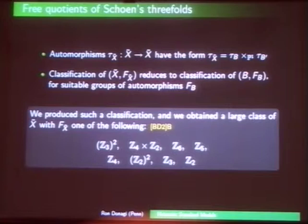We did the classification and the short story is these are the groups you get: the biggest ones are Z3-squared, Z6, Z4 cross Z2, Z5, and then some smaller ones.